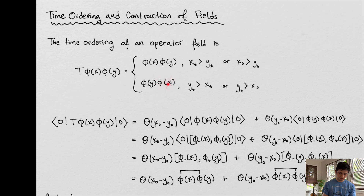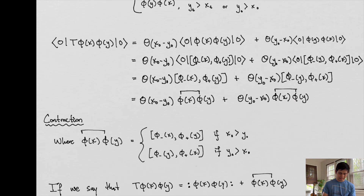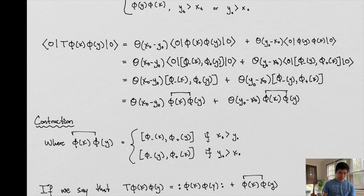Whereas this is the field configuration if x⁰ is less than y⁰. So essentially we're saying if one comes first, then it's going to be operating first — that's time ordering. Let's see what exactly this means in terms of sandwiching this between two states.